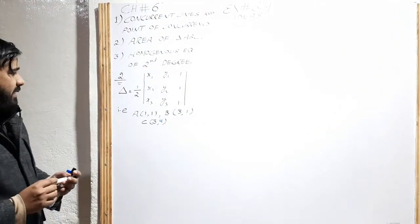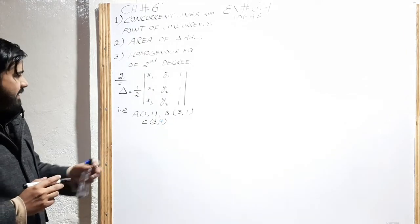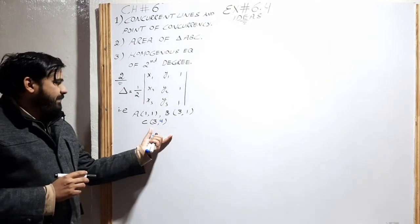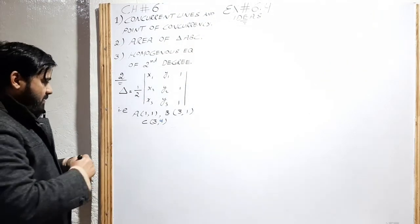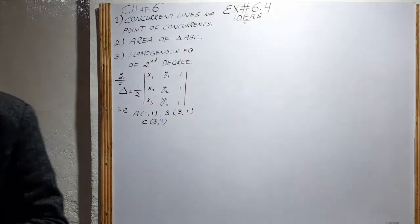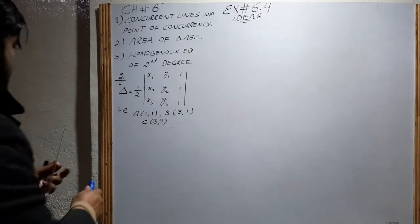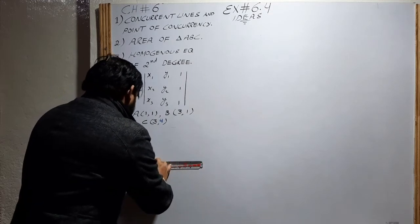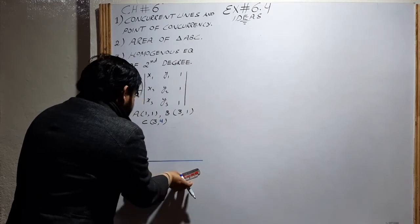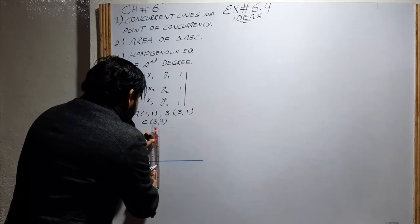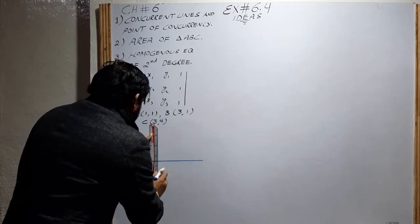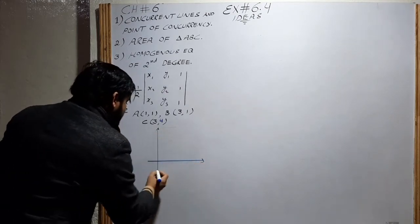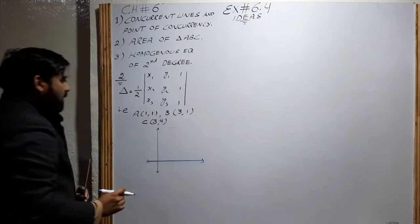First of all, we can easily derive the vertices ABC and join ABC to get our triangle. If we take our scale simply, this is our x-axis and this is our y-axis.